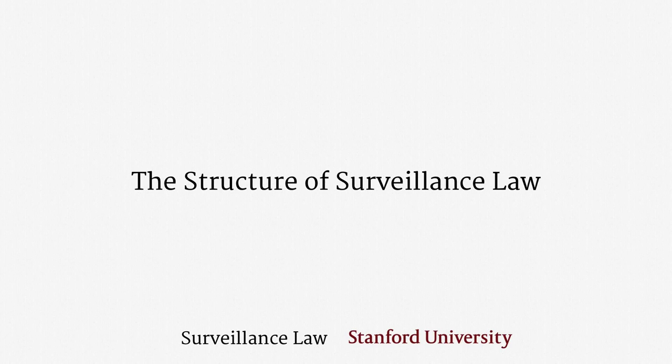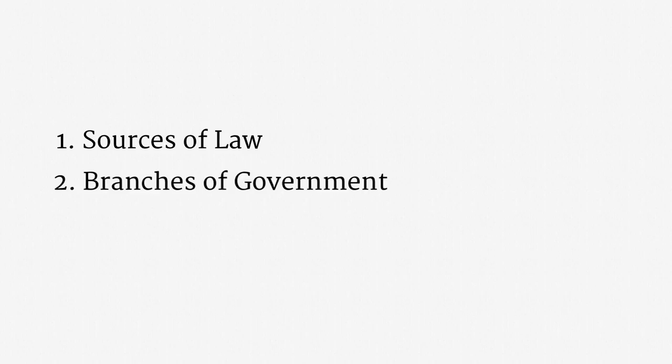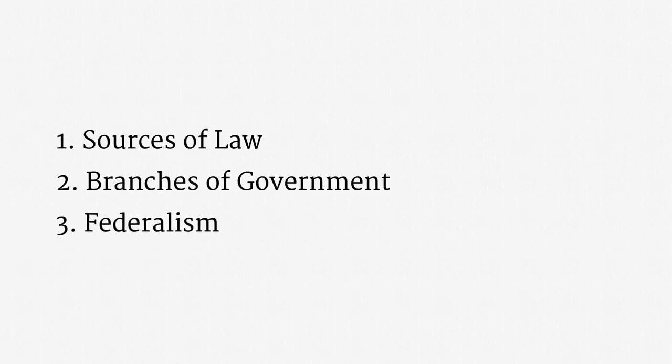Welcome back. This lecture sketches the structure of the American legal system as it relates to government surveillance. There are three topics I'd like to tackle: first, the various sources of surveillance law we'll encounter throughout the course; second, the branches of the federal government and the role each plays in surveillance; and third, federalism — that is, the relationship between federal and state governments on surveillance issues.